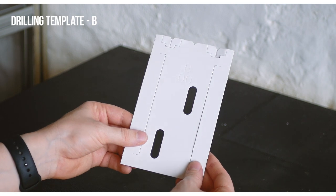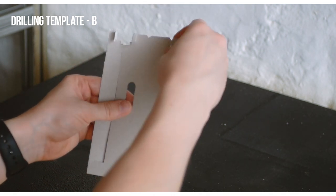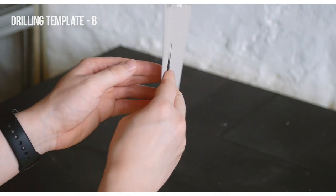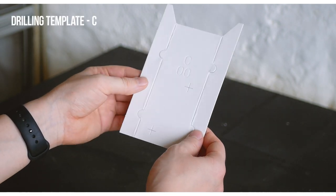Take all three drilling templates out of the packing and start folding the drilling template B. You can pause this video anytime or take a look in the instruction manual. And now fold the drilling template C.